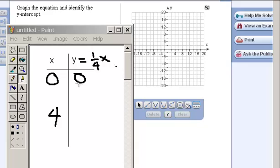4 is also a good number to pick, because 1 quarter of 4 is the same as 4 divided by 4, which is 1. This tells us that two of the many coordinates on this line are 0, 0, and 4, 1. Let's plot those points using the Math Excel graphing tool.